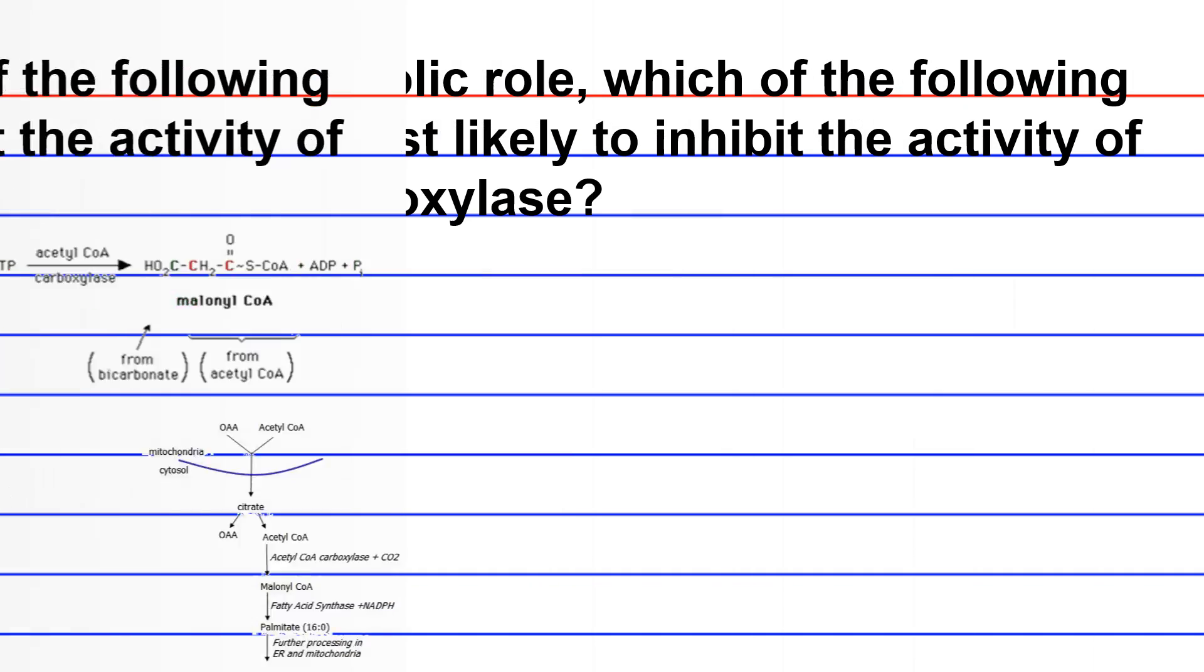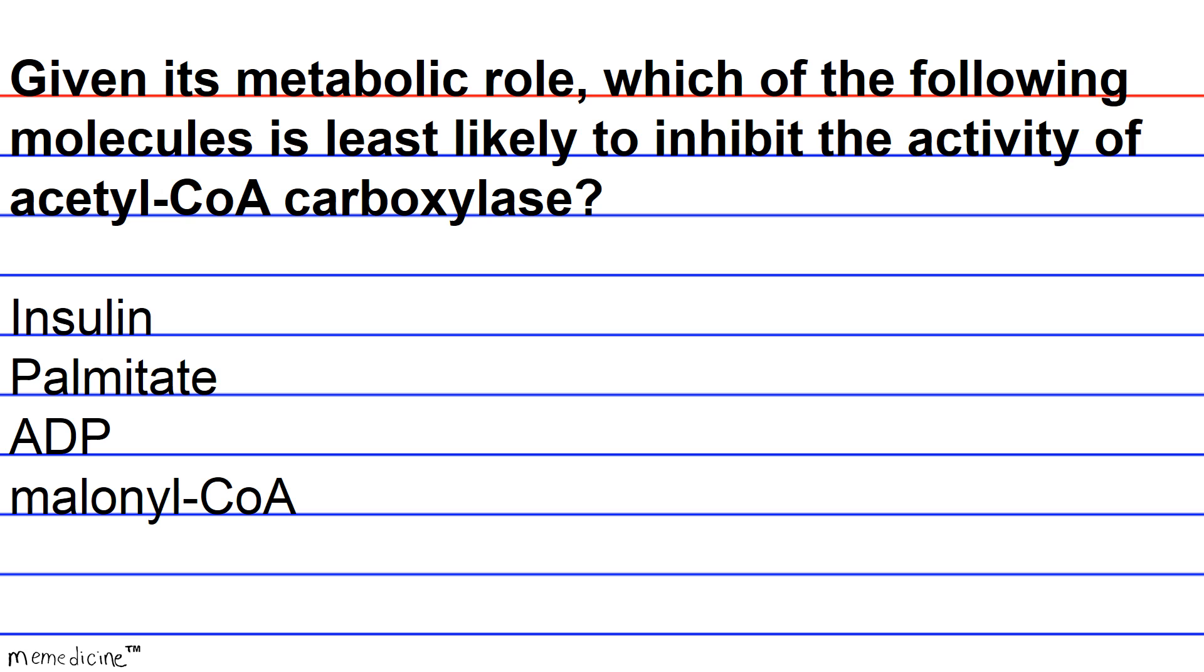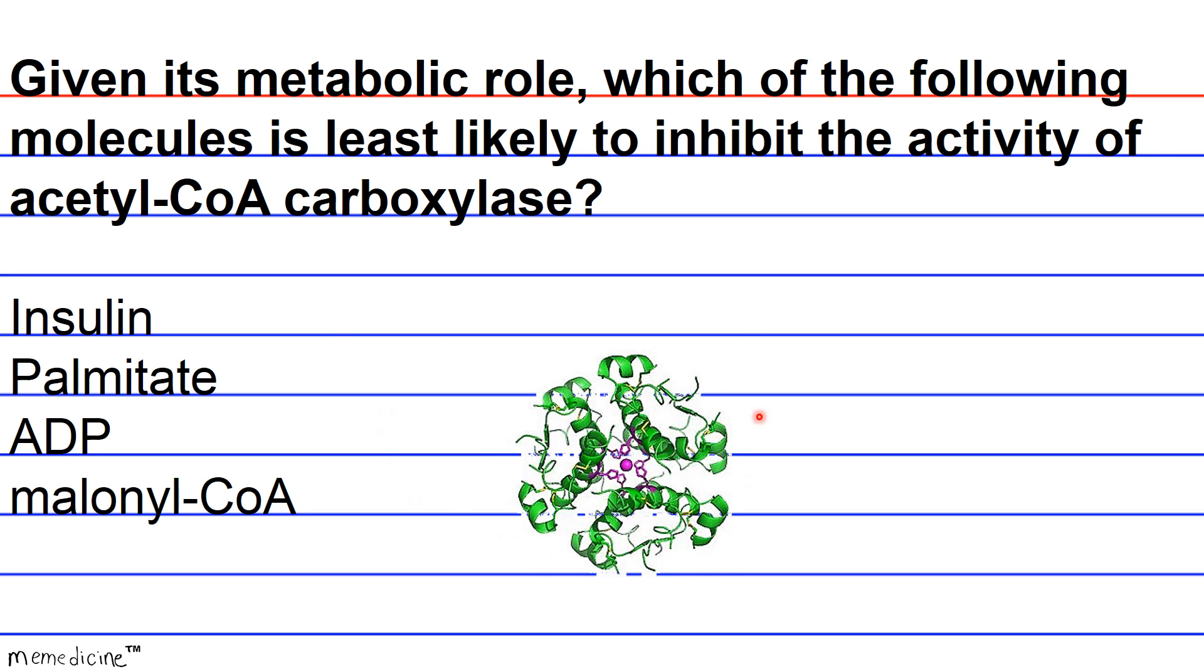So in order to solve this problem, you have to understand that the products, whether direct or downstream of an enzyme-catalyzed reaction, often inhibit the catalytic ability of the enzyme. So insulin, which is pictured here, aside from its role in regulating glucose uptake by cells, usually upregulates anabolic processes. And when I say anabolic, I mean the making of molecules or the building up of molecules, such as fat or glycogen.